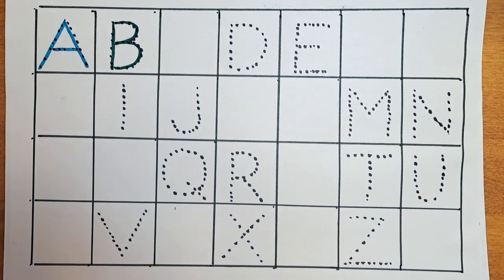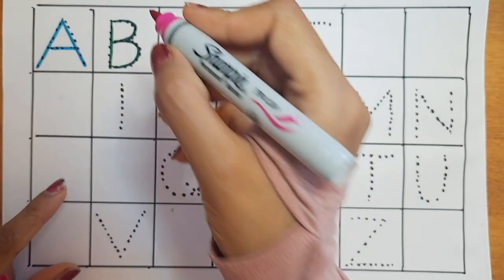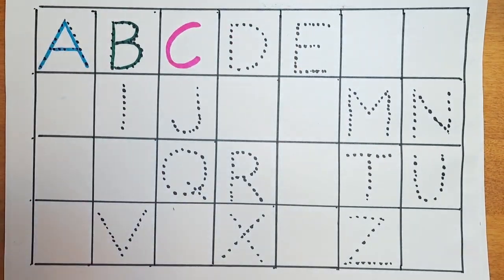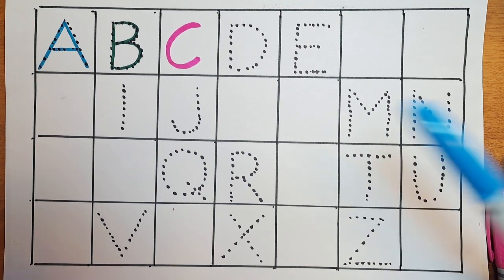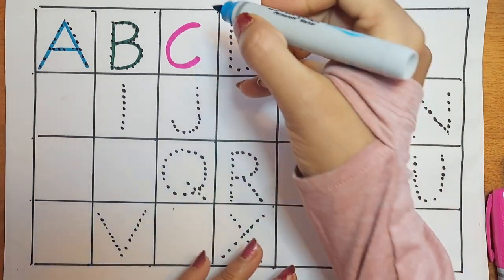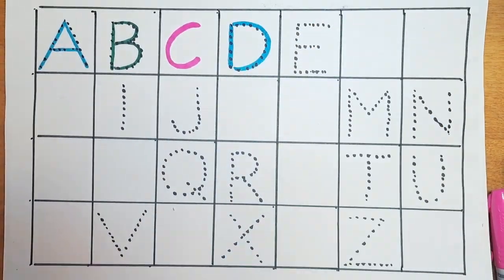What is the next letter? It's C. Can we do the C with the pink color? Let's do it. C for circle. Can we do the next one in blue? Let's do this D now. D for dolphin.